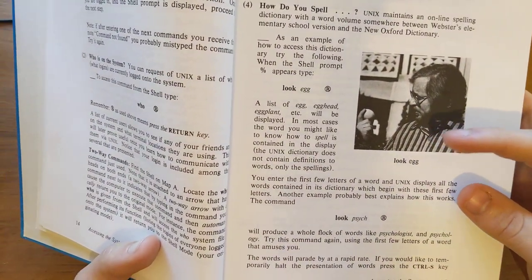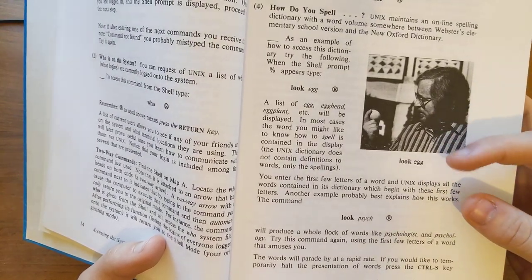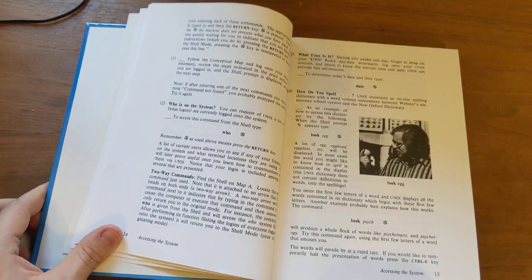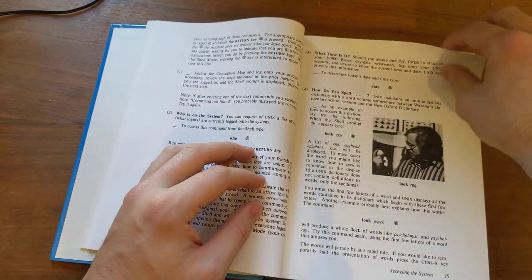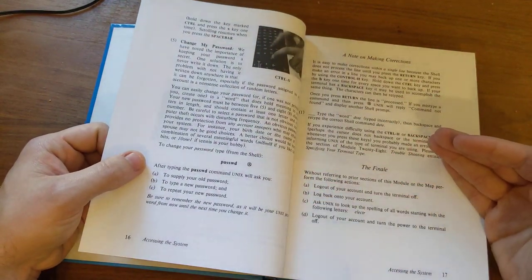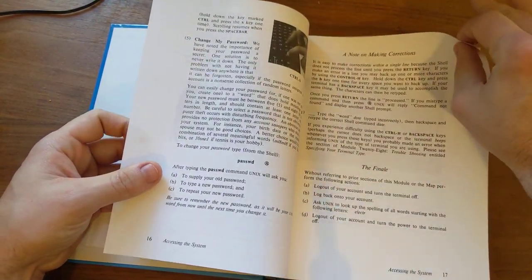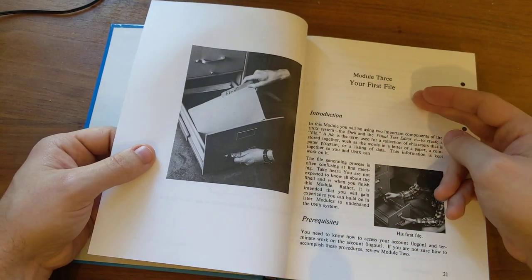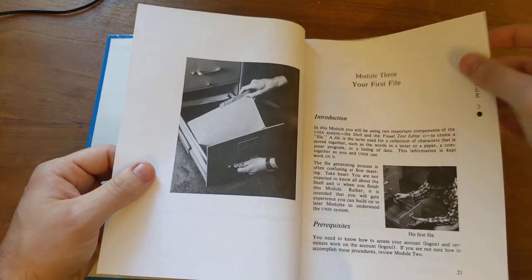They do have some commands that I don't think exist anymore. For example, there's this command, look. And this is for, like, spell checking, I guess. Like, you put in, you feed a word to it, and it gives you all the words that look like it in the dictionary or something like that. Or contain it. So, you know, it's a way of, back in the old days, it's a way of checking for, you know, if you're spelling things correctly. You know, change your password, stuff like this. So this is, like, basic logging on stuff.